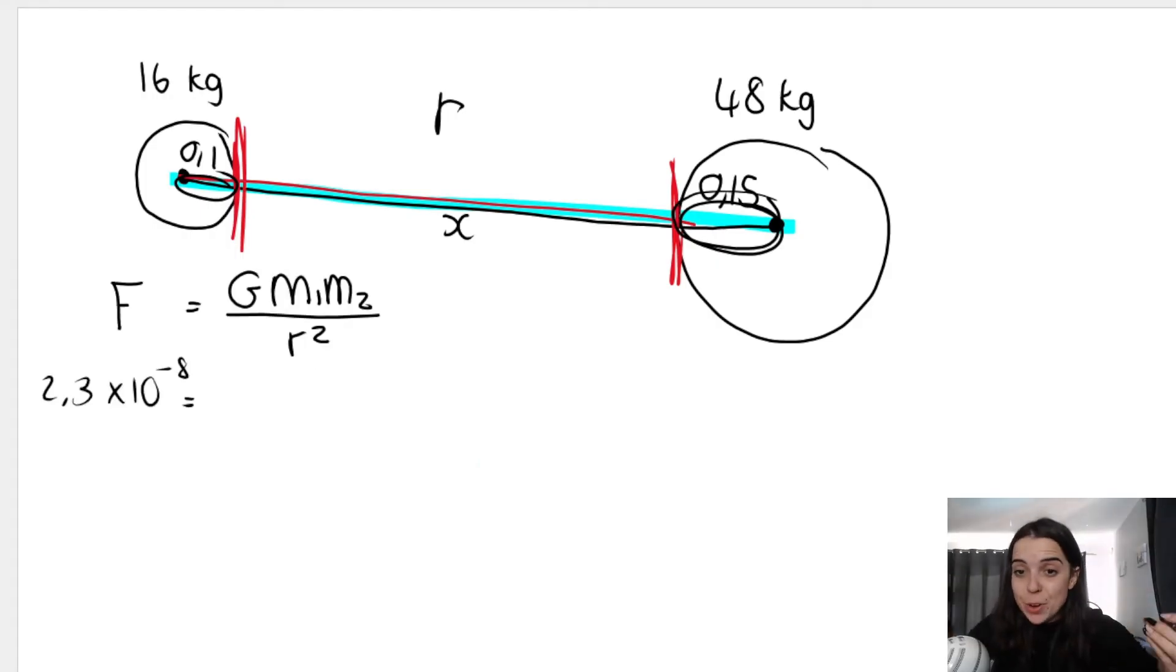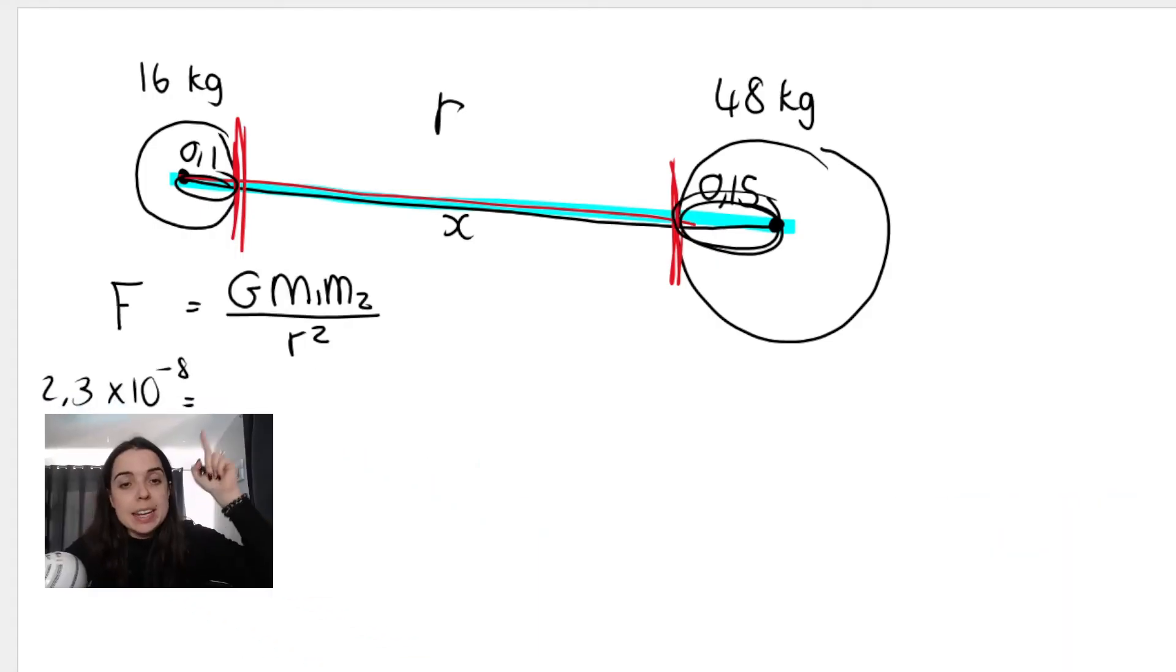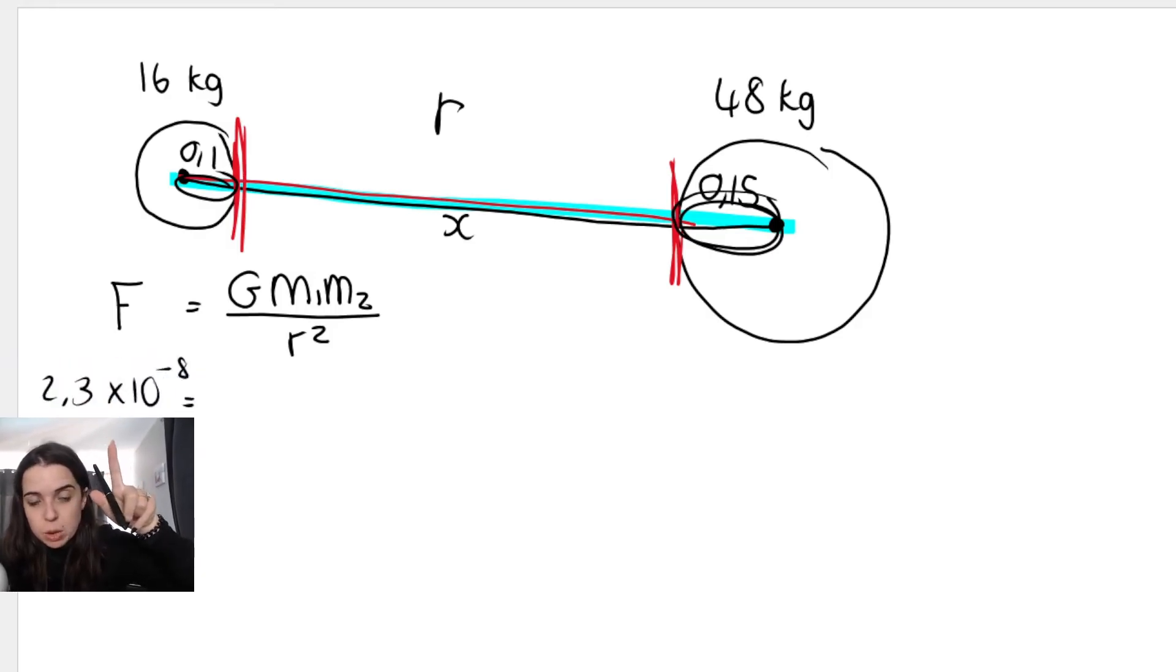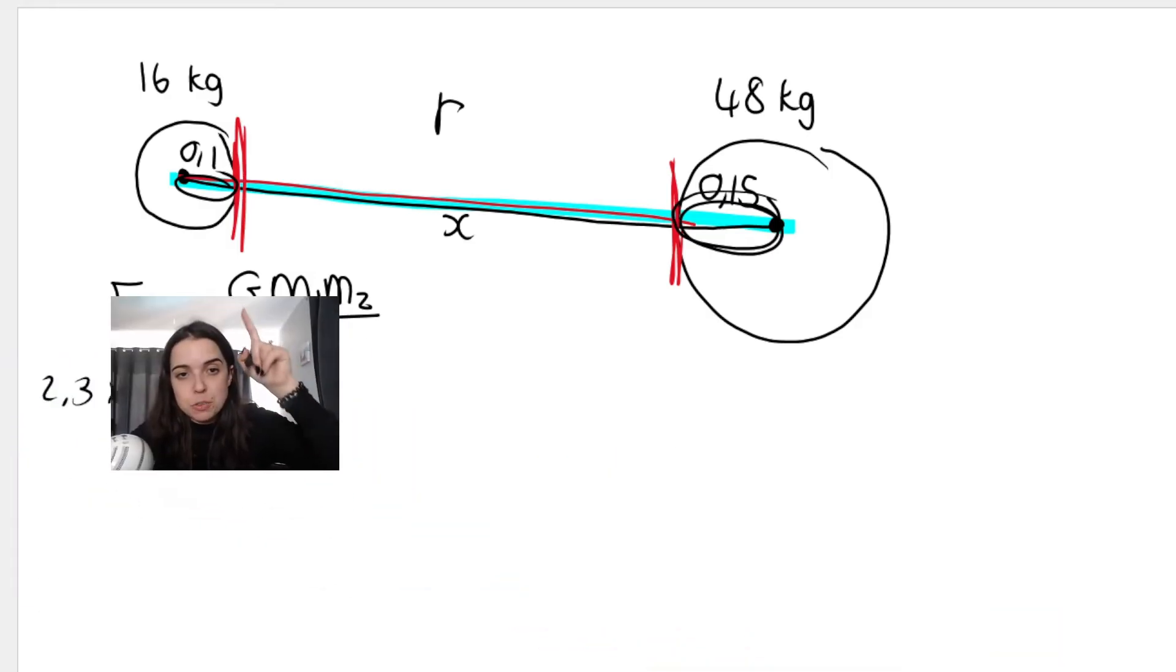So I've written my formula first, blank formula first always. Now I'm substituting. So in the place of F, I'm putting the force that was given to me. Then in the place of G, it's the constant, you get it on your formula sheet.